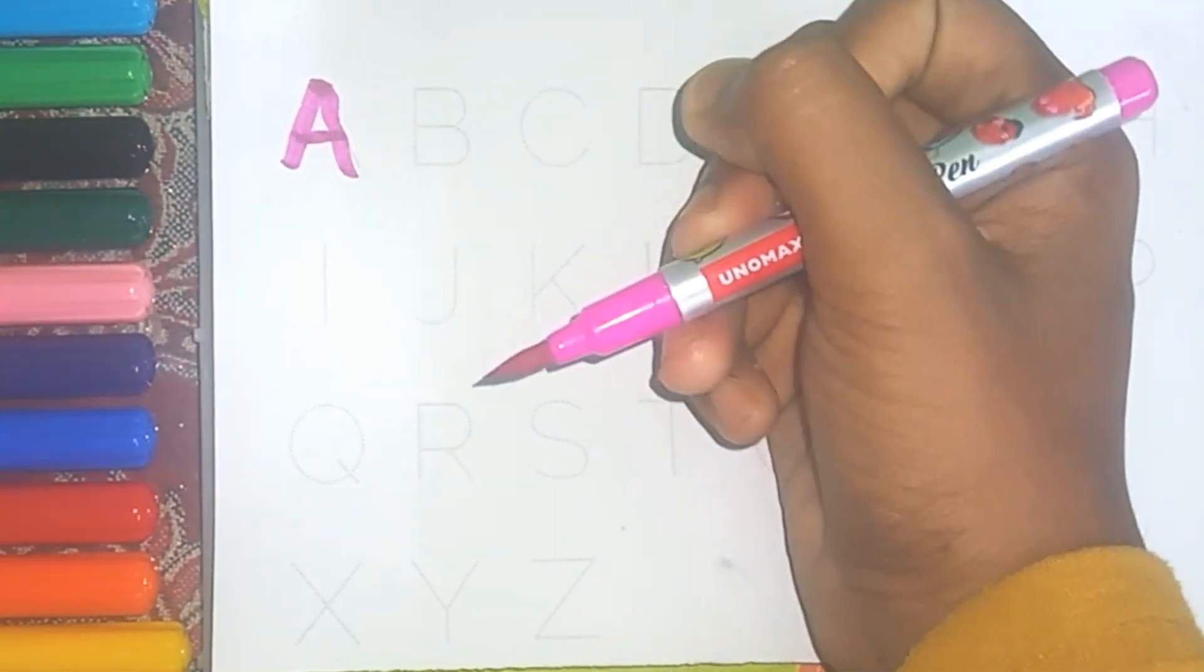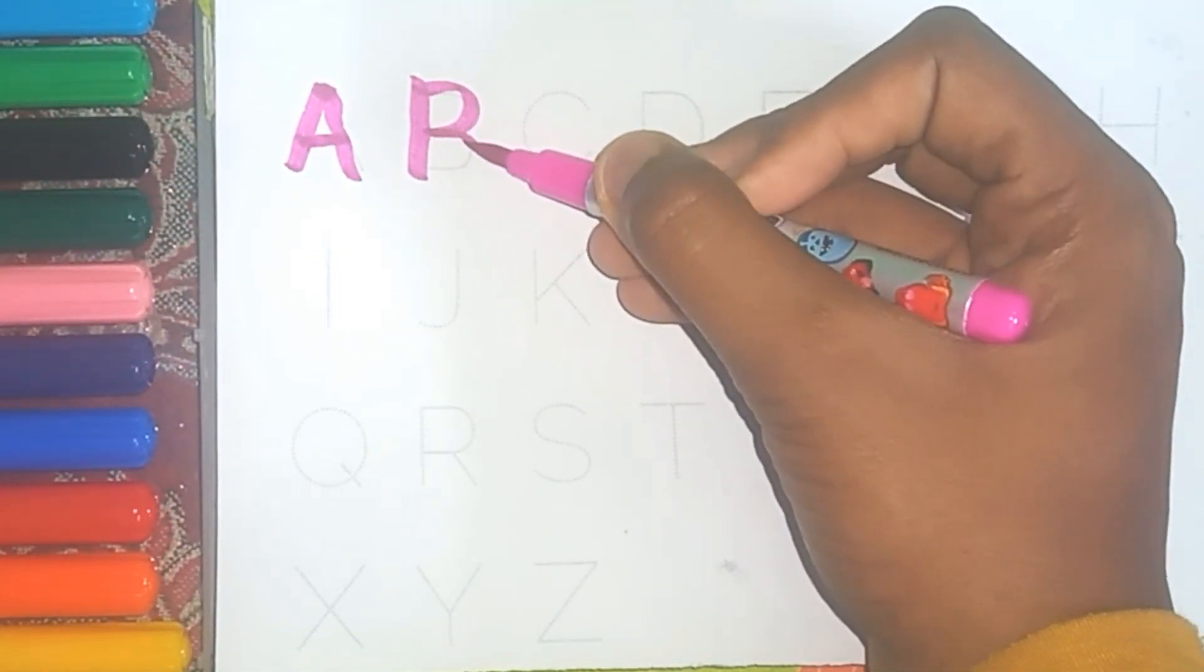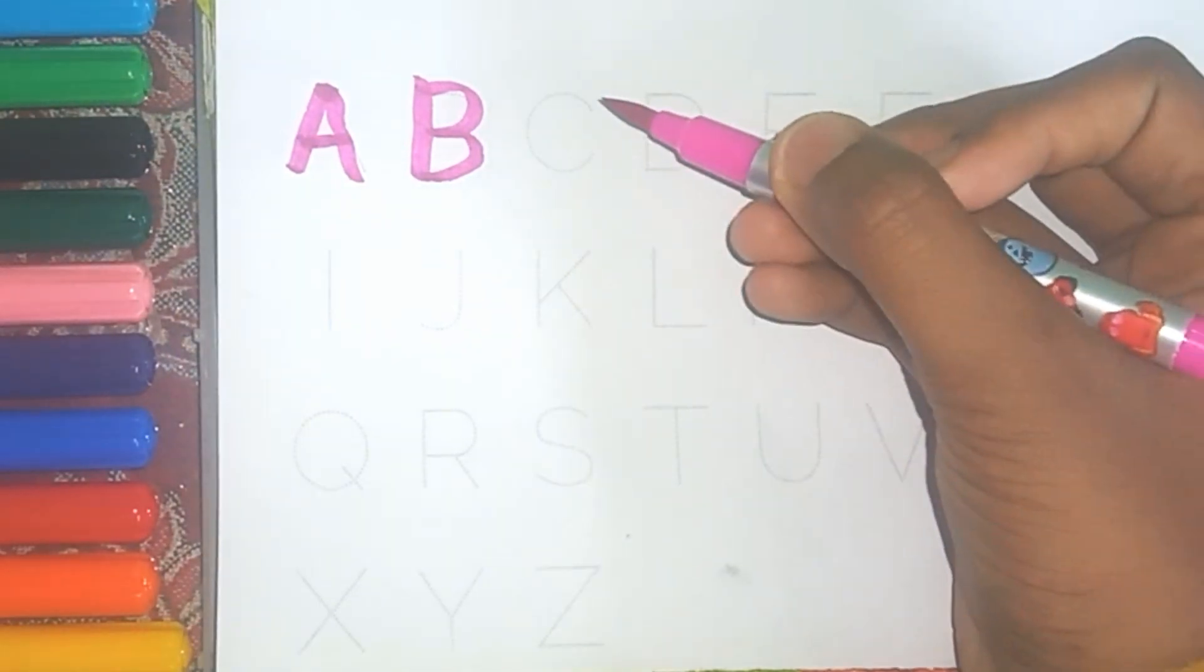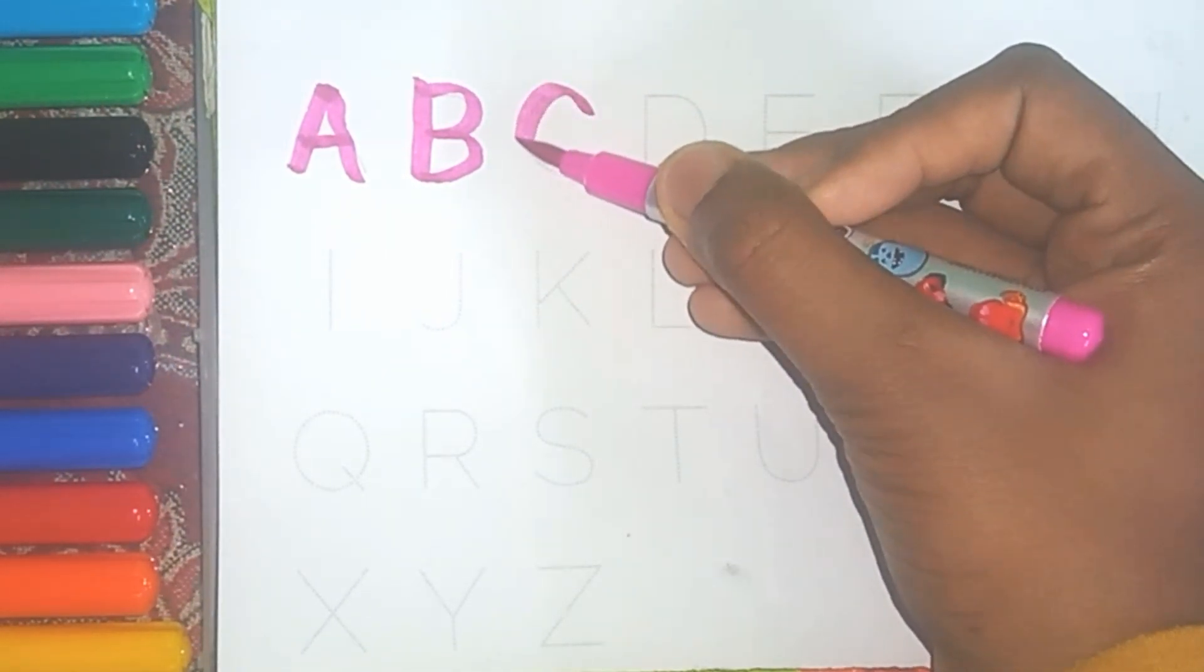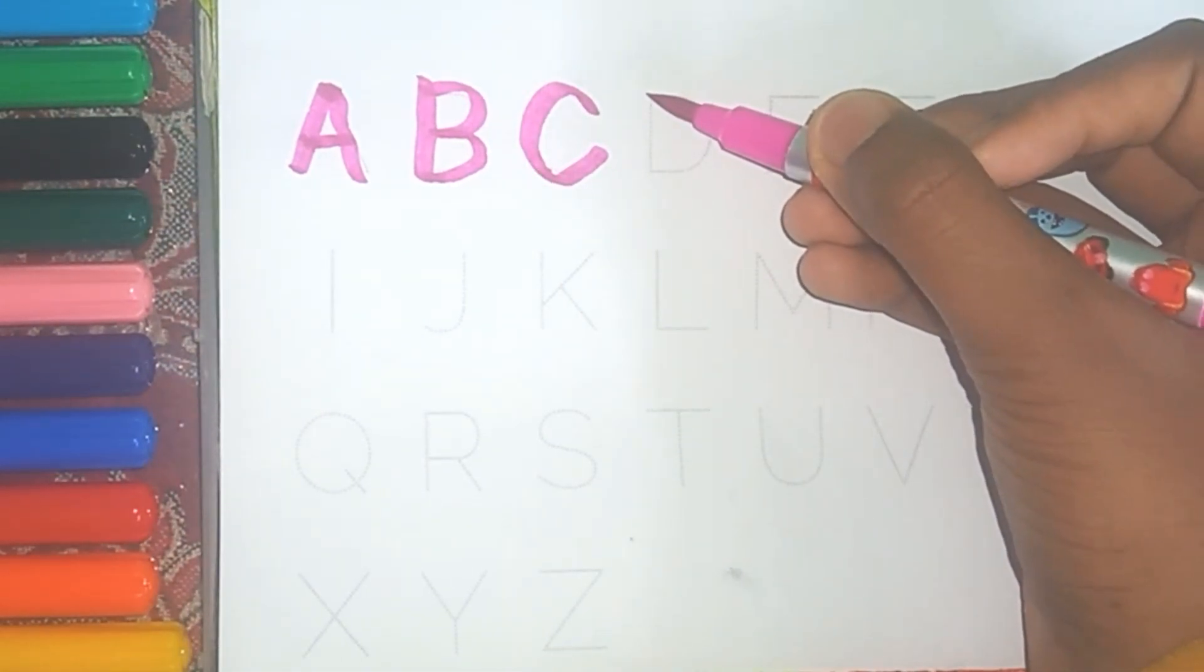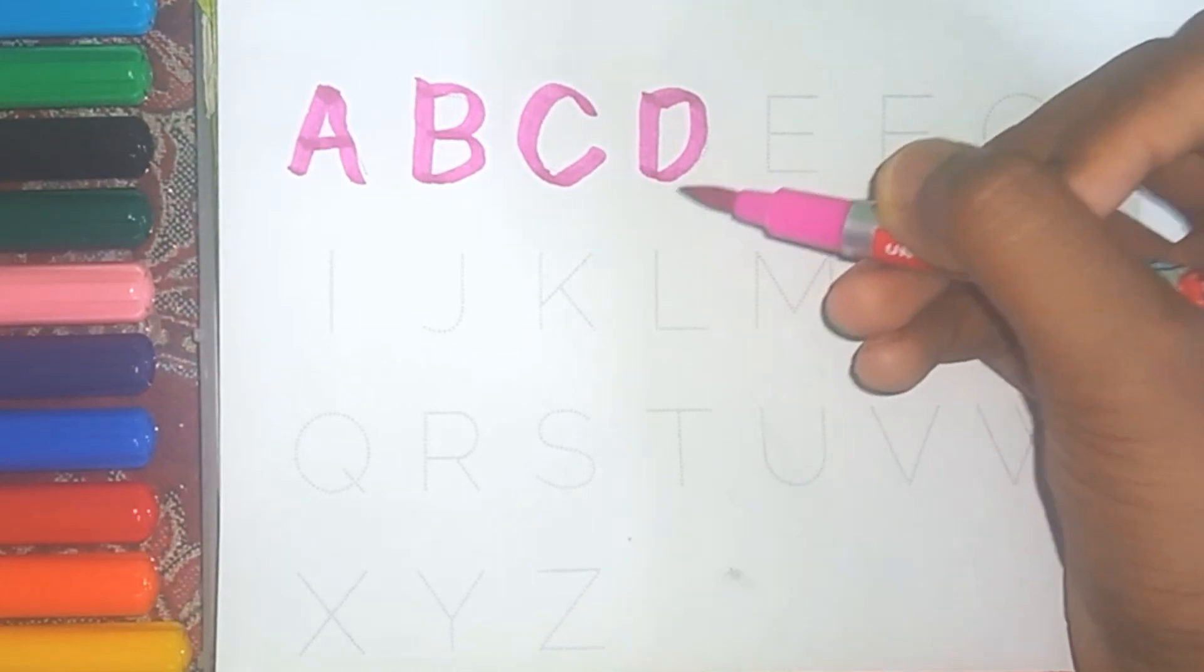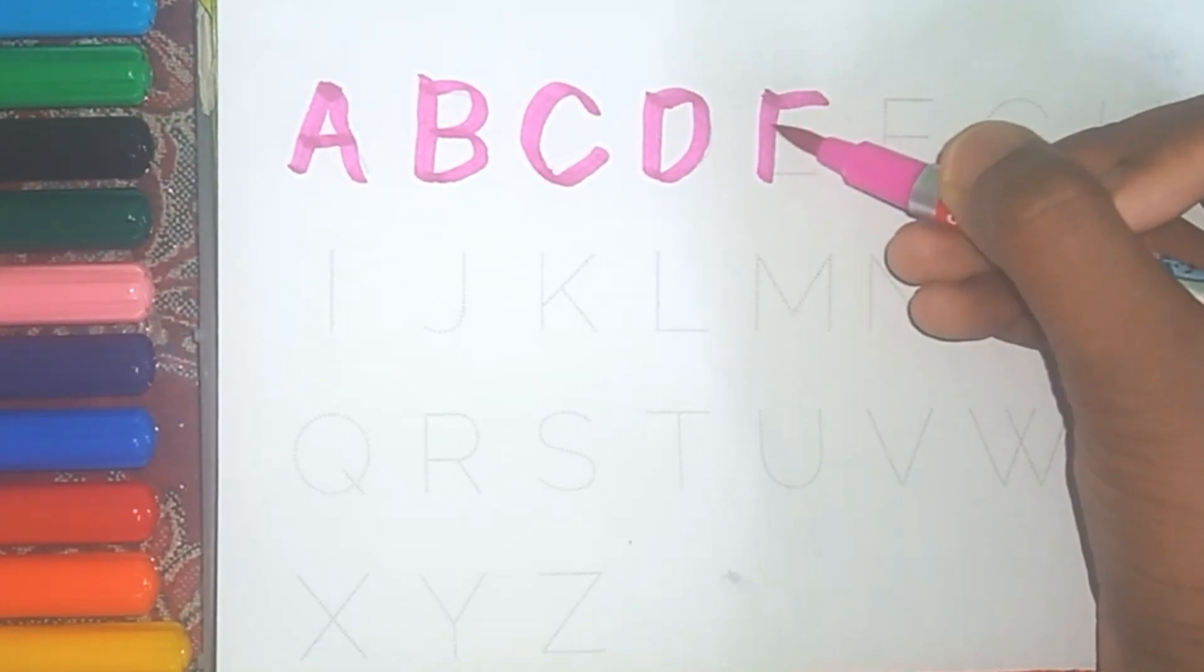A. A for Aeroplane. B. B for Bed. C. C for Car. D. D for Dog.